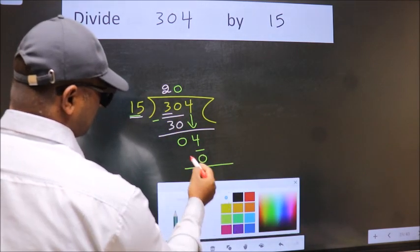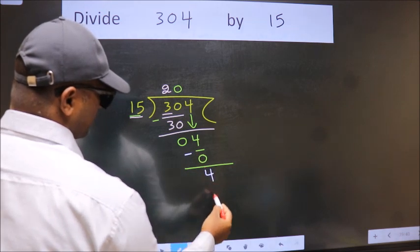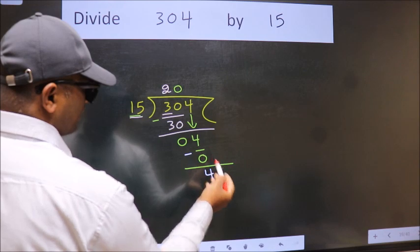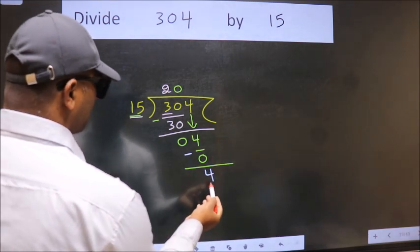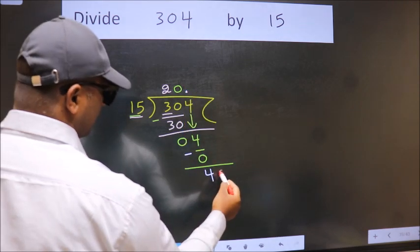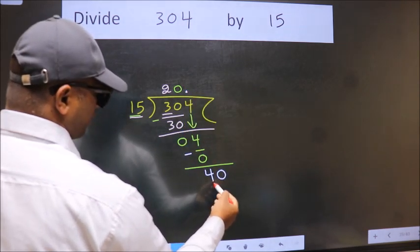Now we subtract and get 4. Over here, we did not bring any number down, and 4 is smaller than 15.